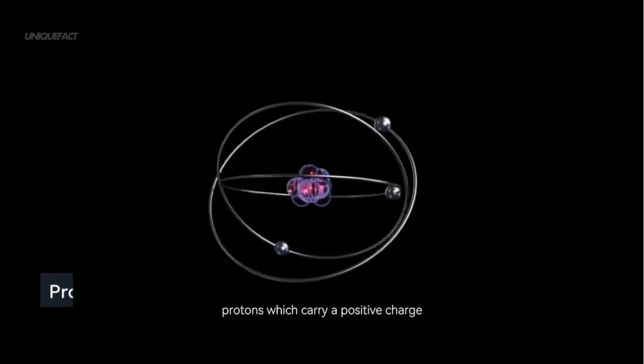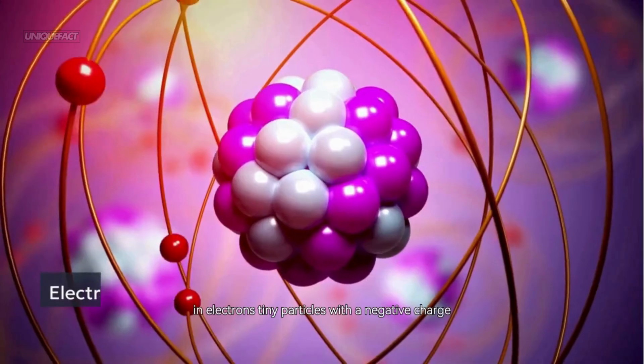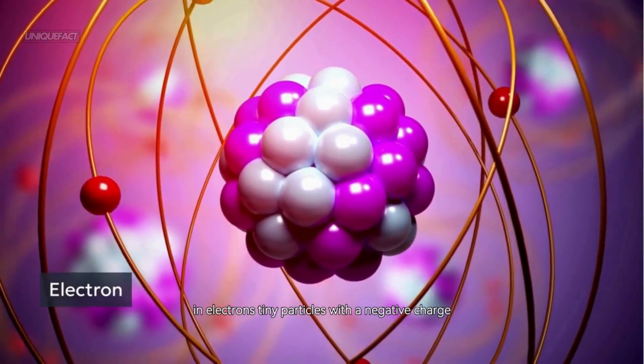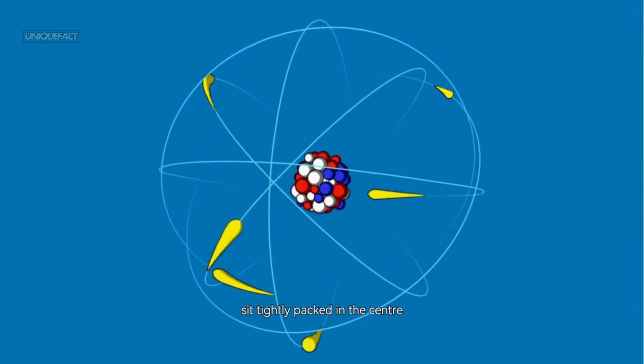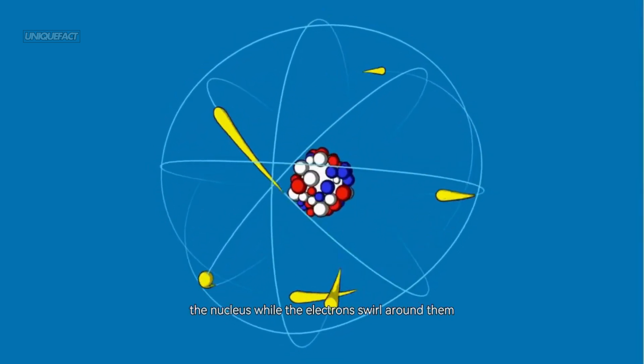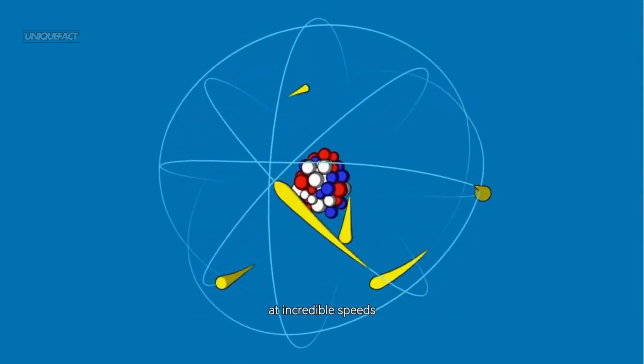Protons, which carry a positive charge. Neutrons, which have no charge, and electrons - tiny particles with a negative charge that orbit the nucleus. The protons and neutrons sit tightly packed in the center, the nucleus, while the electrons swirl around them at incredible speeds.